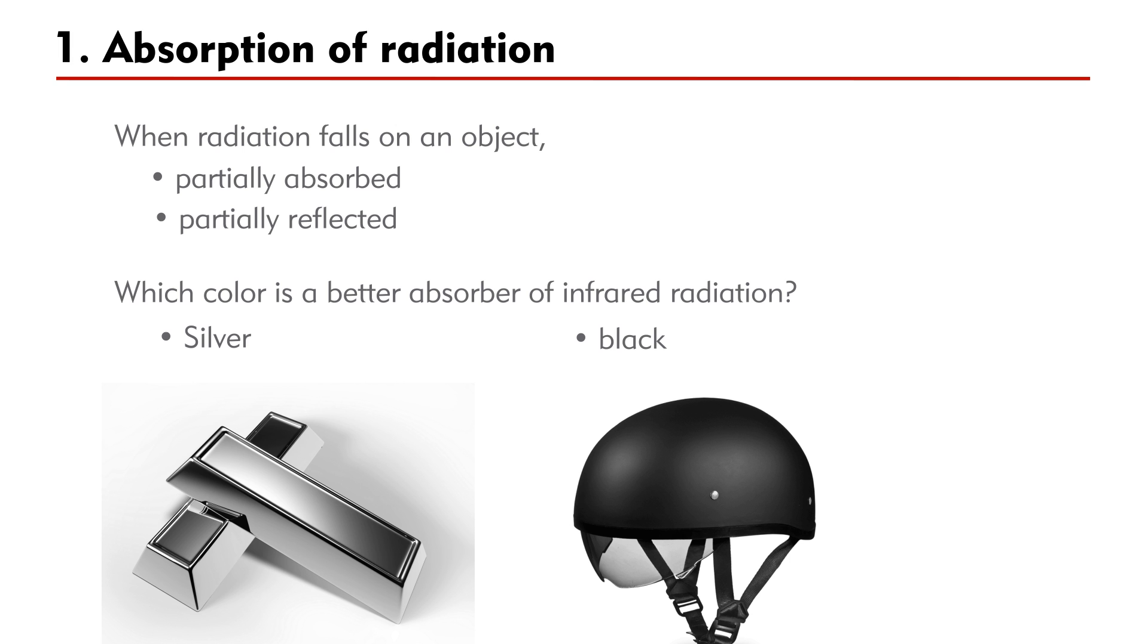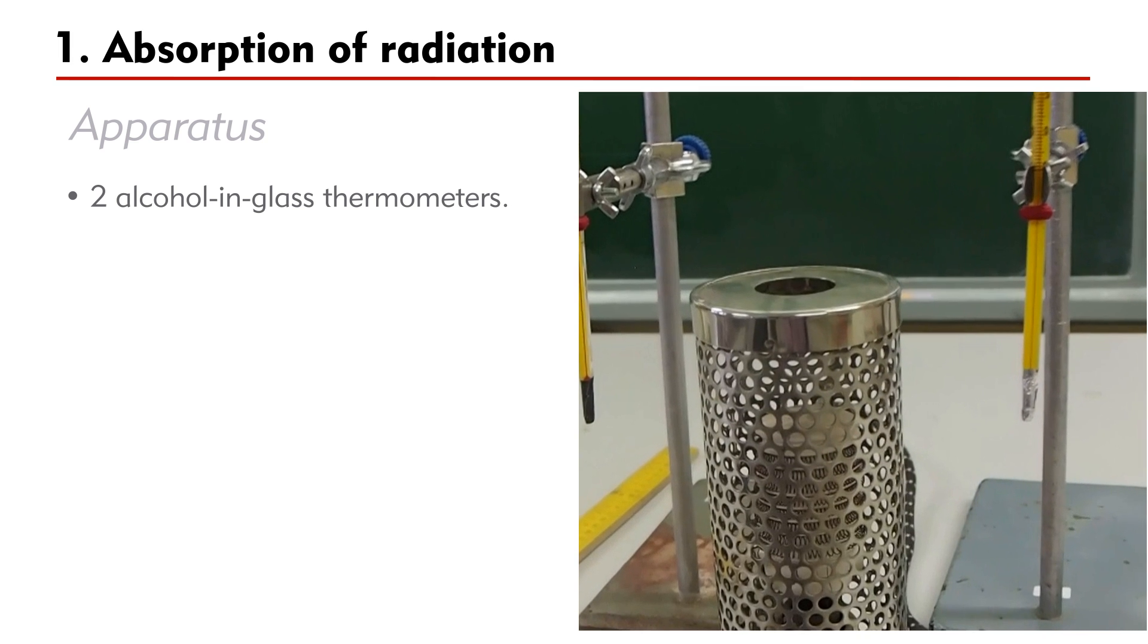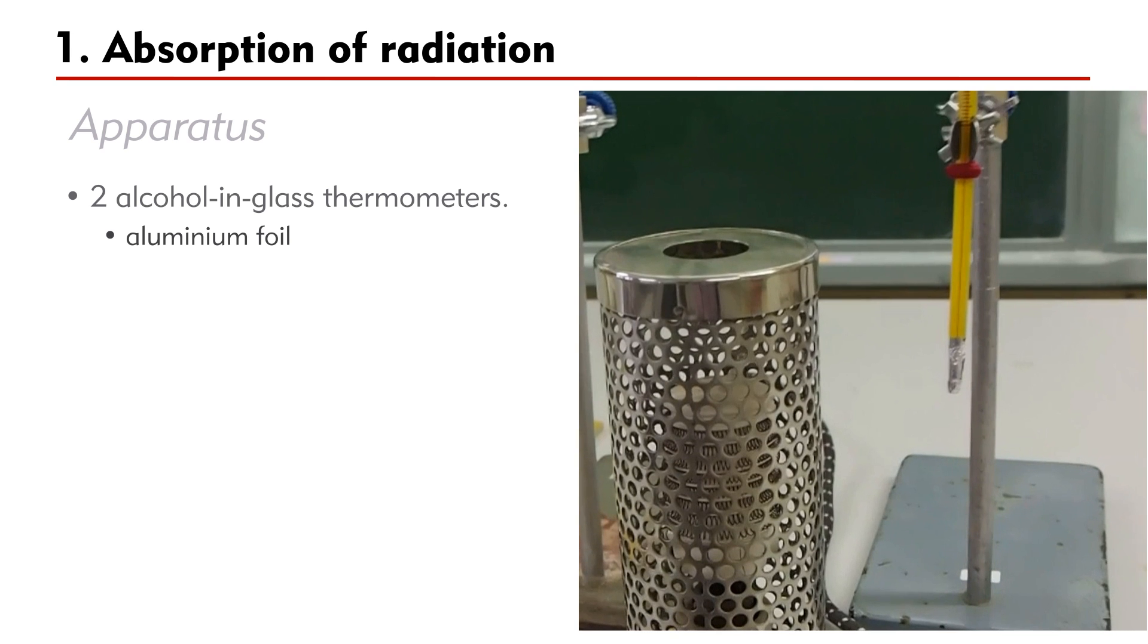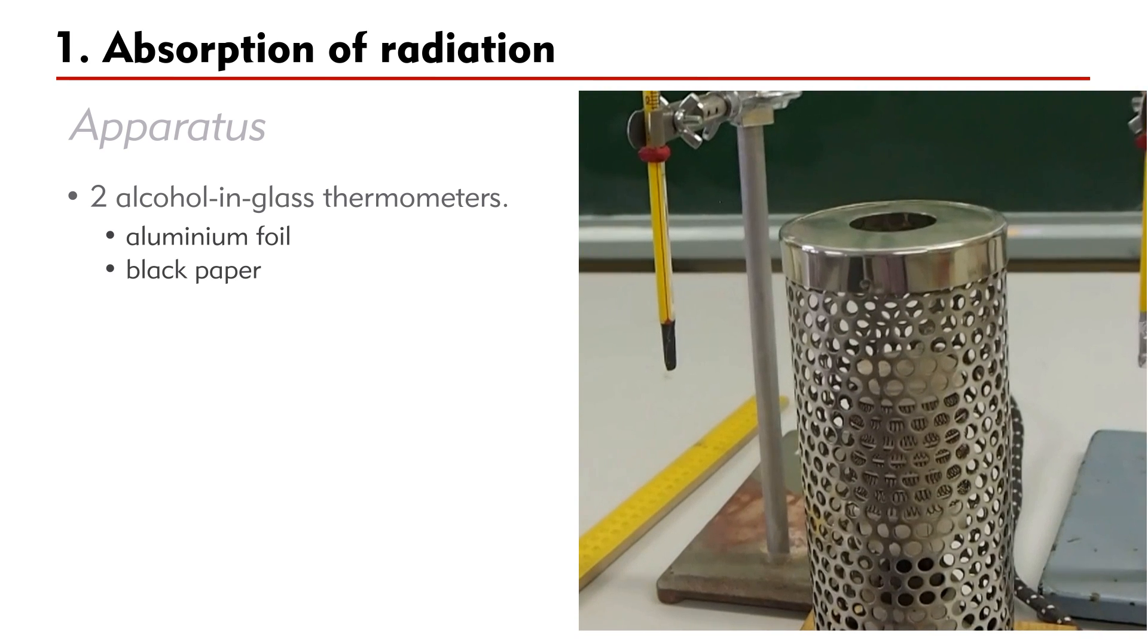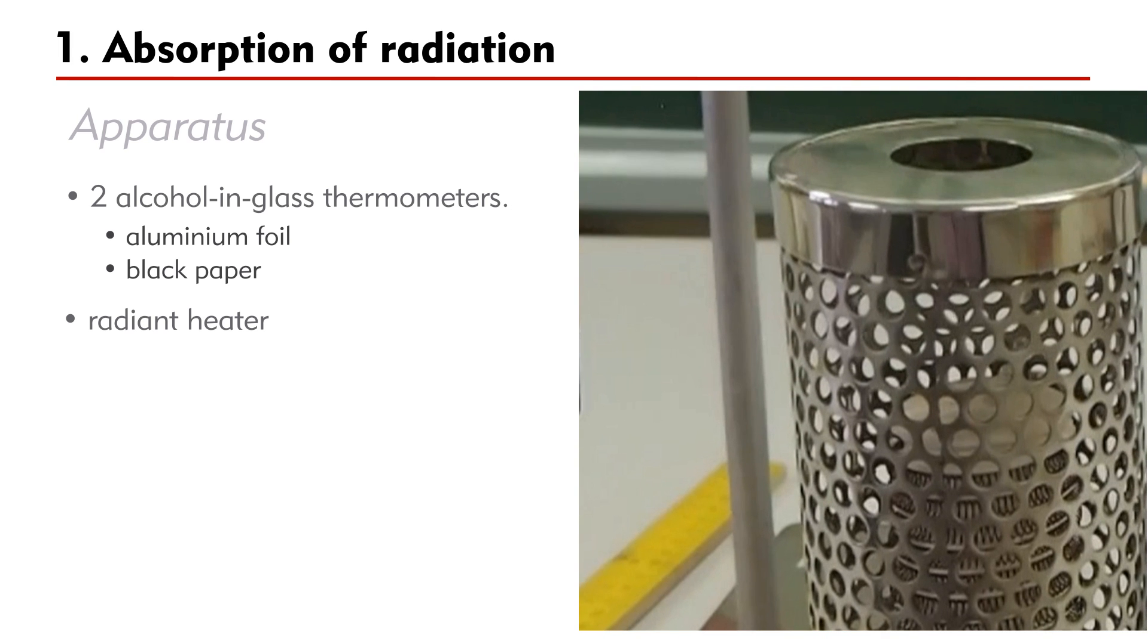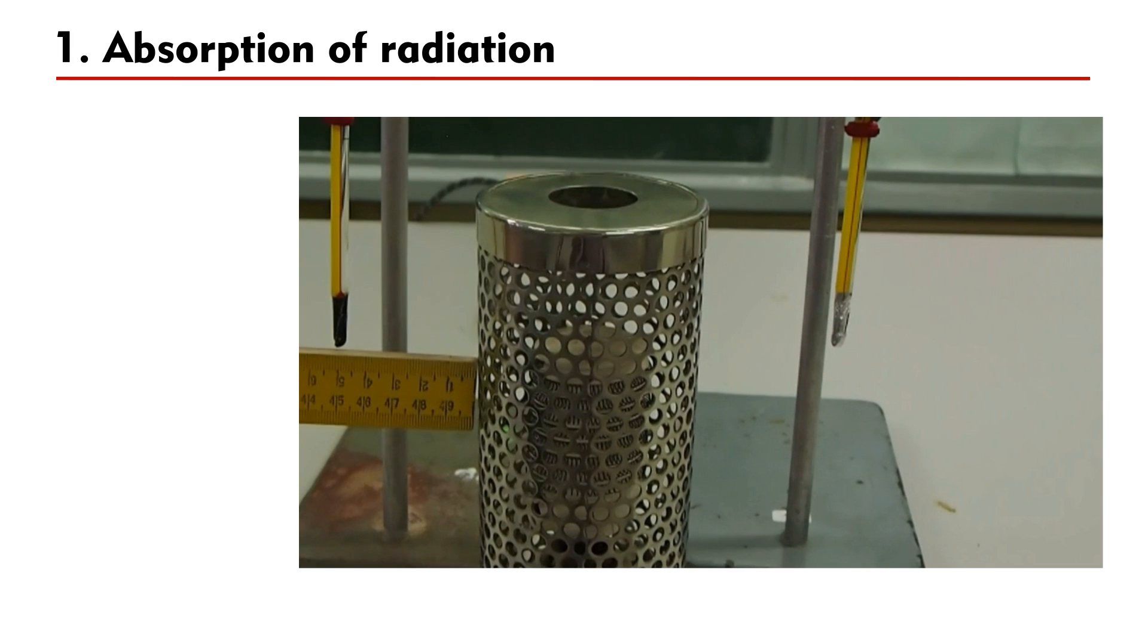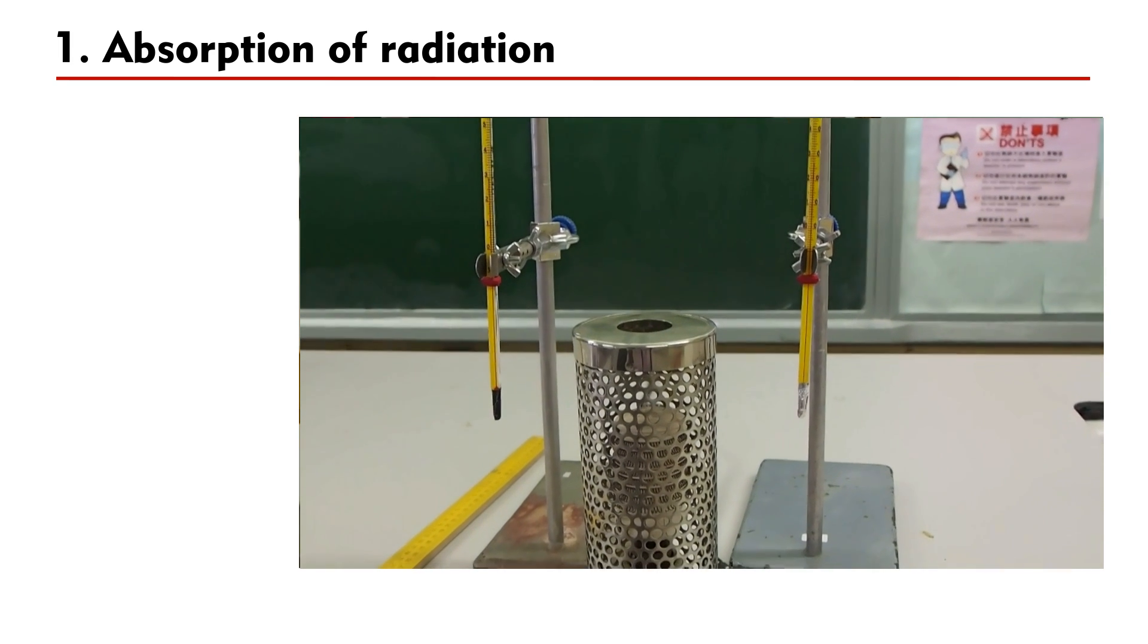Let's carry out an experiment to find out the answer. The apparatus used include two alcohol in glass thermometers. One coated with silvery aluminum foil and the other with dull black paper. We also need a radiant heater. Place the two thermometers at equal distances from the heater. Turn on the heater and record the temperature regularly.